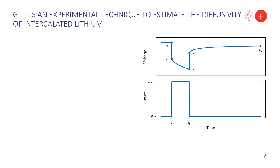One of the most common ways to estimate the diffusivity of interpolated lithium is using the GITT, or galvanostatic intermittent titration technique, which consists of applying a constant current pulse to the battery and then switching it off and letting the battery reach equilibrium again. This pulse needs to be short and weak, so it causes a small variation in the concentration and in the state of charge of the battery. We need to repeat it many times to sweep the whole range of operations we are interested in.